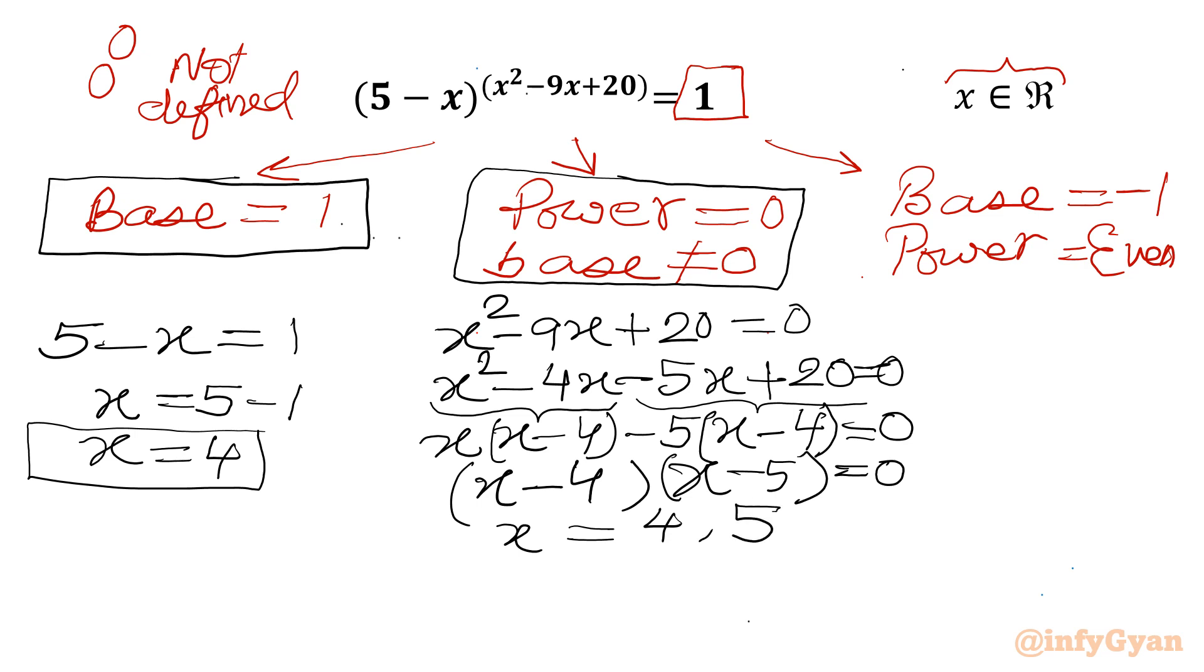Now base cannot be equal to 0. What is our base? 5 minus x can't be 0. So x cannot be equal to 5. So we will reject immediately x equal to 5 from our answer list. So from second case we are getting the same x equal to 4 only. 5 will be rejected.